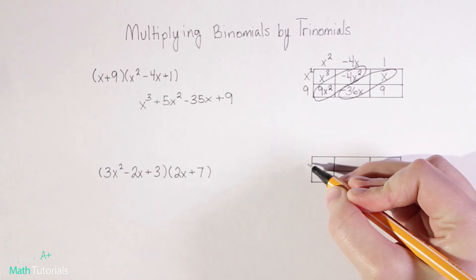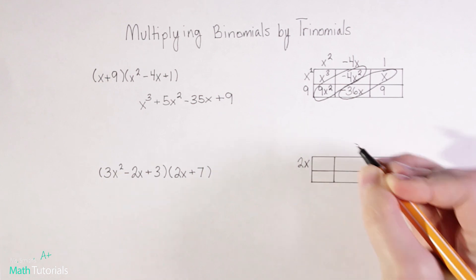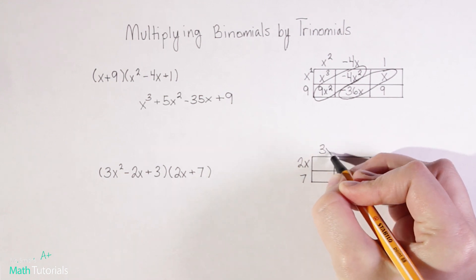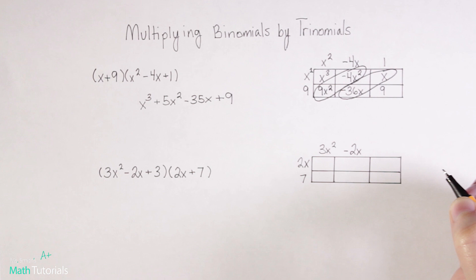So remember, I'm going to put my two binomial terms here. So I've got 2x and positive seven. And now I put my three trinomial terms up top. So I've got 3x squared, negative 2x, and positive three.